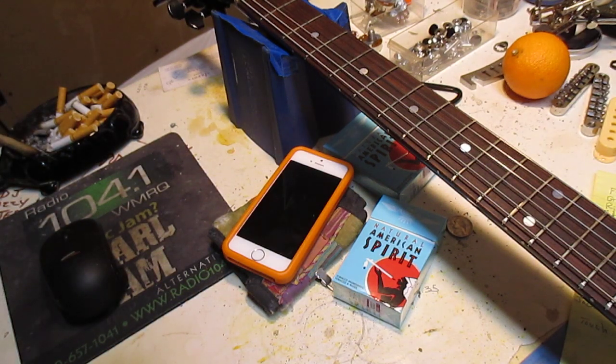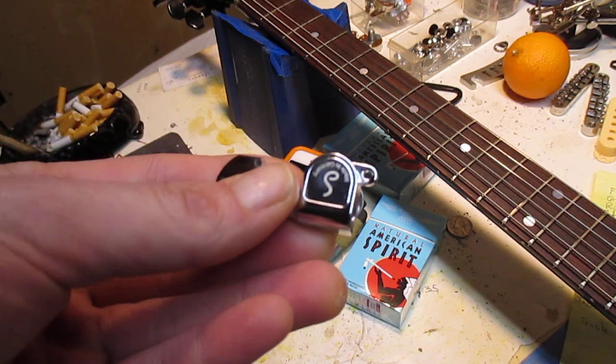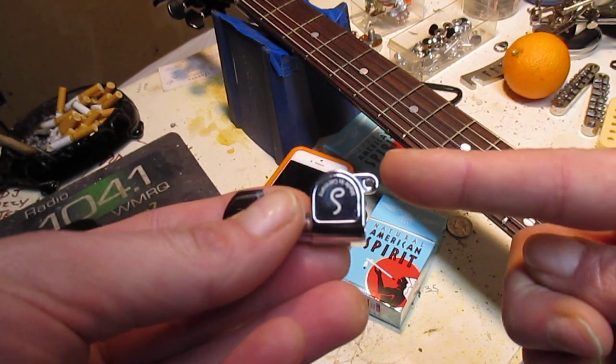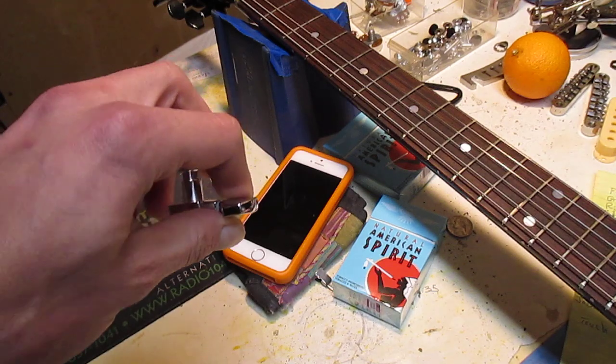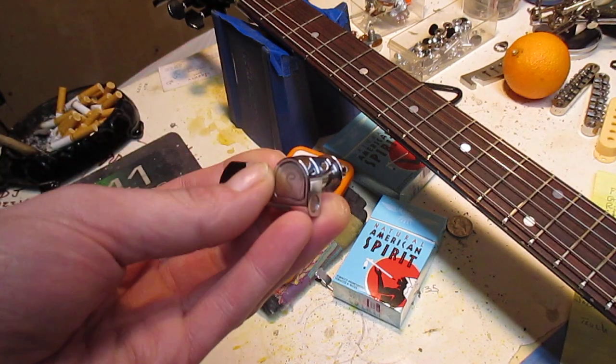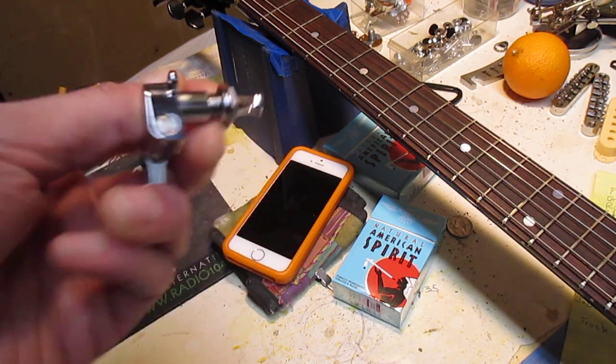The used ones I got were angled, and when you're working with the Travis Bean with the aluminum neck, I'm not drilling a new hole in an aluminum neck. So I have to just spend the money and get the new ones.